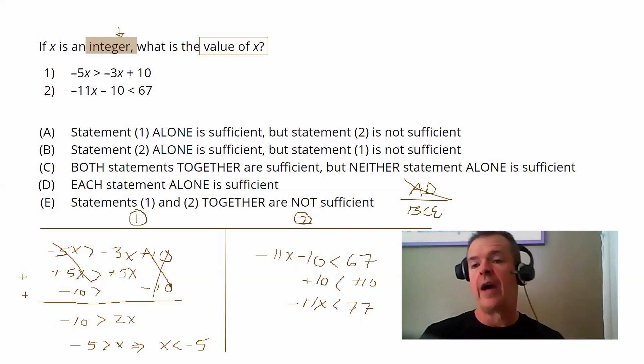So I divide both sides by a negative 11 because I want to get the X on its own. Remember that if you divide or multiply an inequality with a negative, you have to flip the sign. And so what we see is X is greater than negative seven.